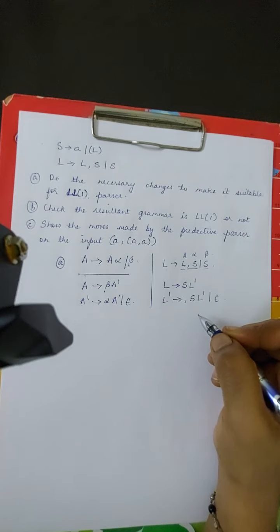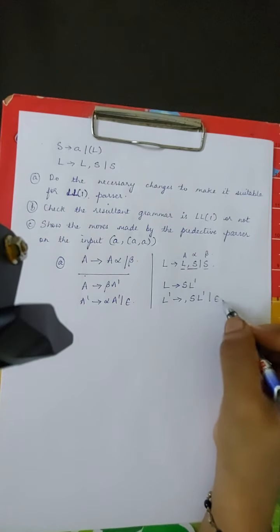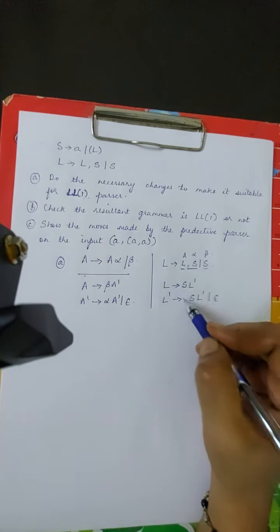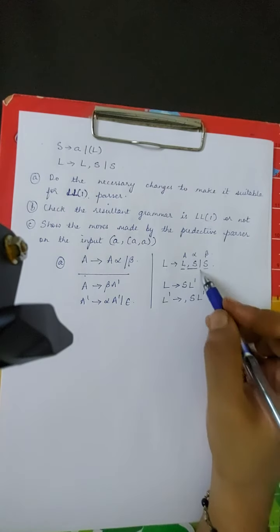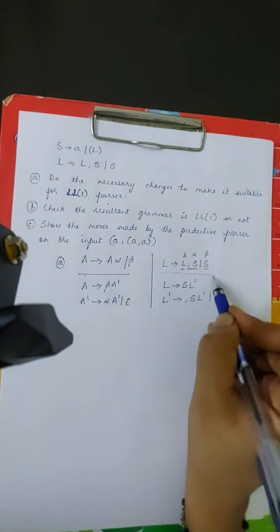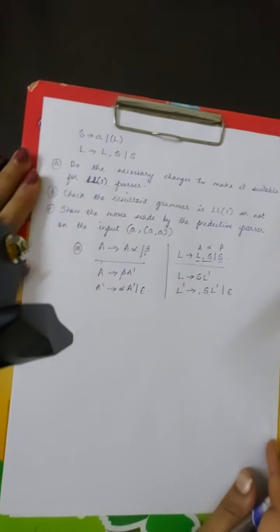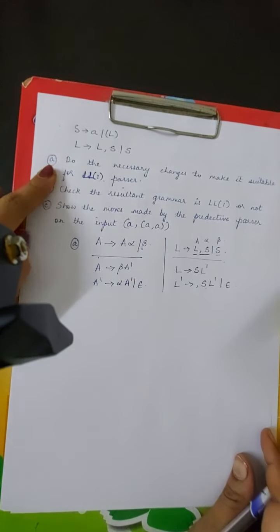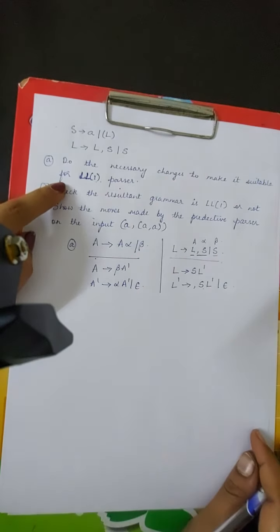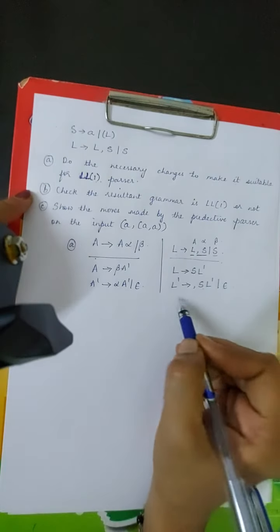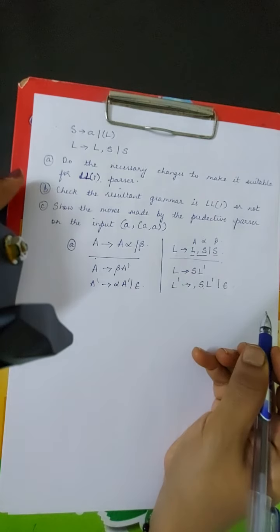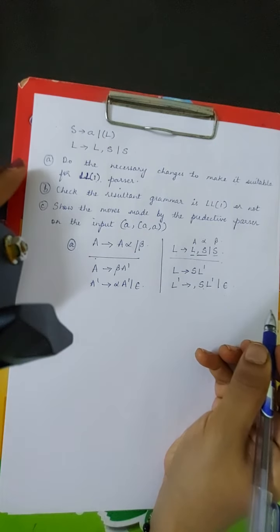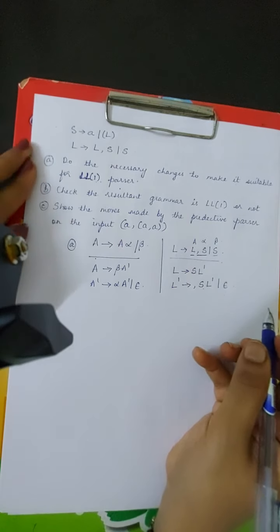By this substitution the grammar becomes non-left recursive and suitable for performing LL(1) parsing. If we substitute these values back we will get the same input string using the same production, so the two forms are equivalent. When the question asks to do the necessary changes for LL(1), we write these substitutions and state that the left recursive property has been eliminated.